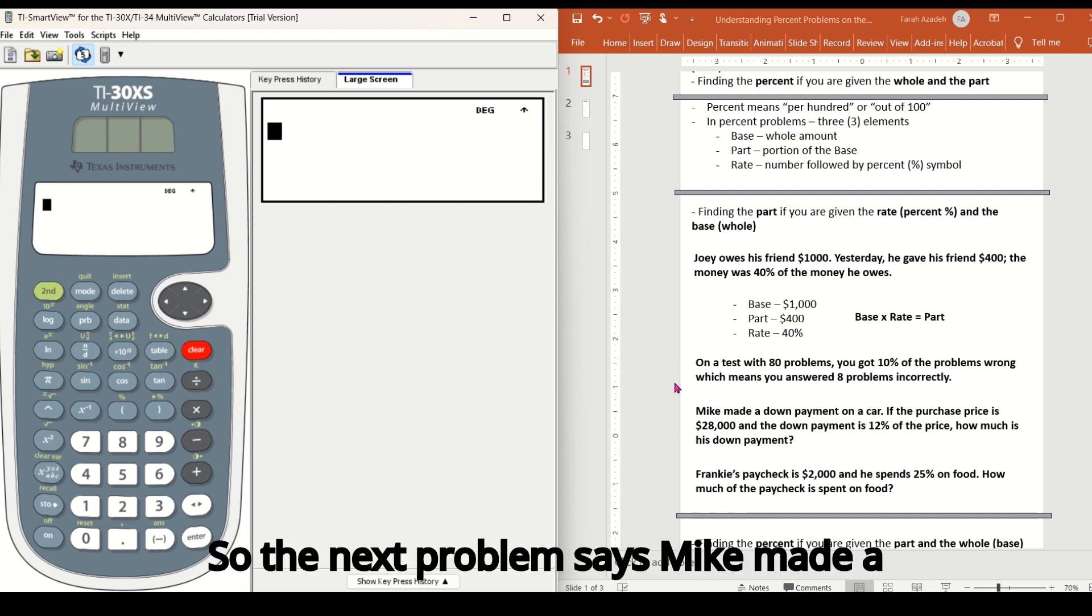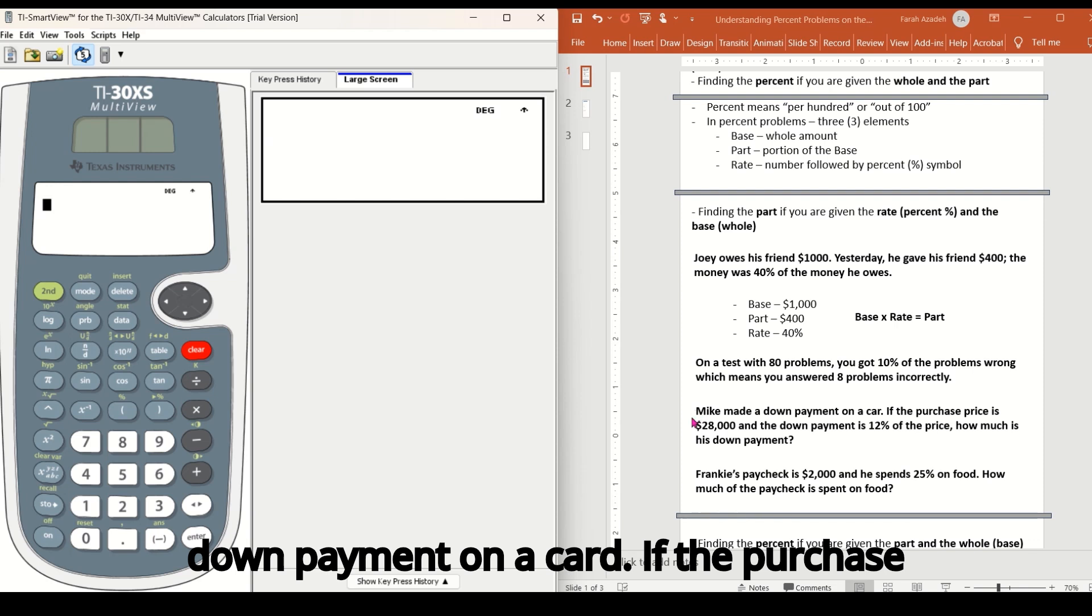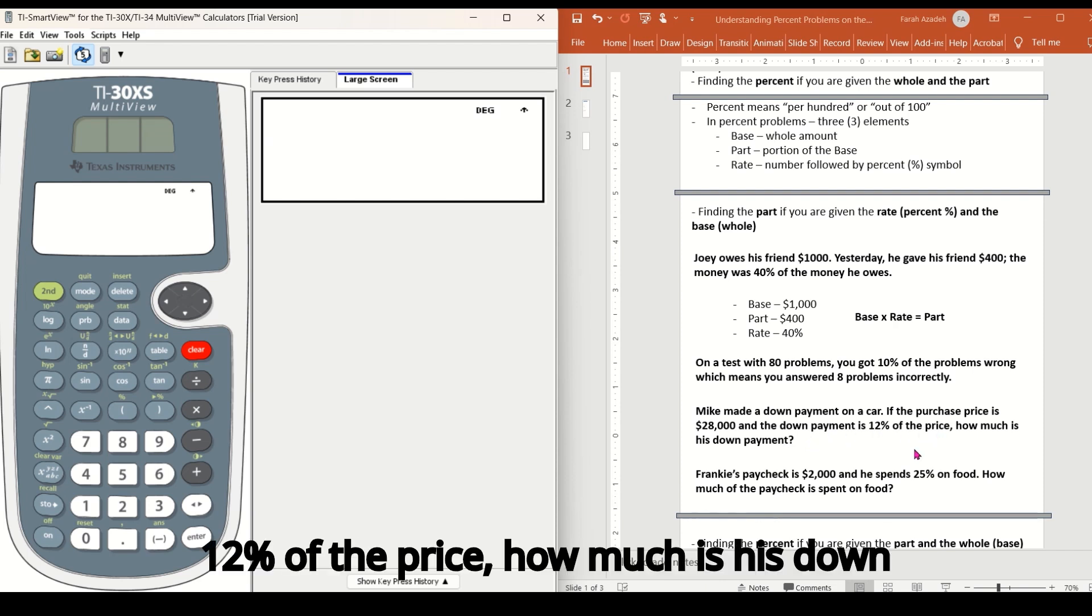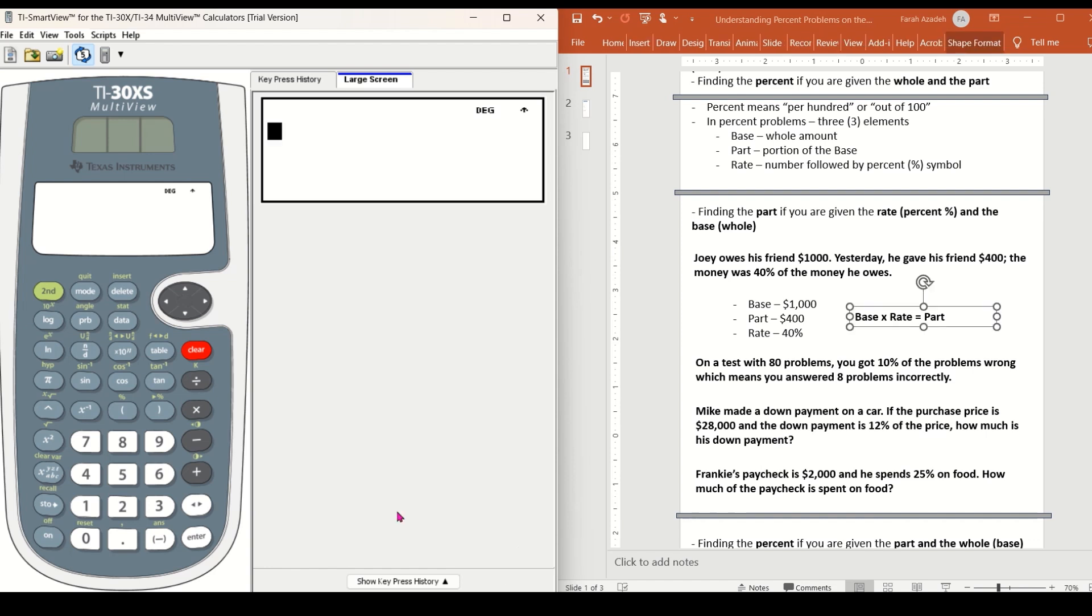So the next problem says, Mike made a down payment on a car. If the purchase price is $28,000 and the down payment is 12% of the price, how much is his down payment? So let's go over to our calculator and figure this one out.